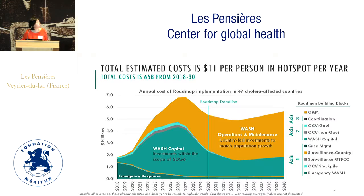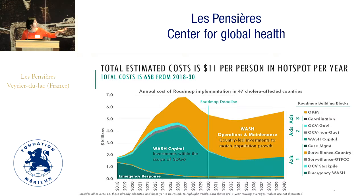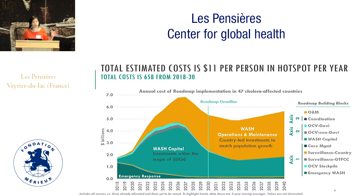This next slide shows the estimated cost of the roadmap. Overall, we're estimating $11 per person in a hotspot per year, with a total cost of $65 billion from 2018 to 2030. The roadmap pillars are shown by the axes, and the largest drivers are WASH. Everything modeled in the cost methodology is in line with what's already in scope of SDG 6 — we're not modeling anything out of scope.